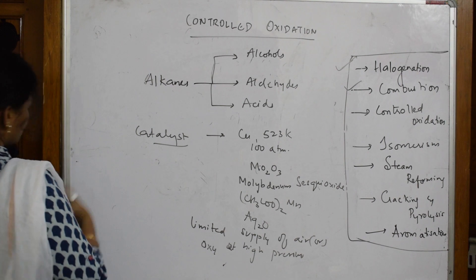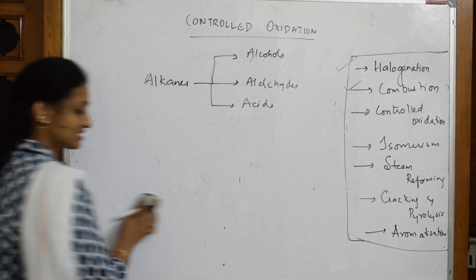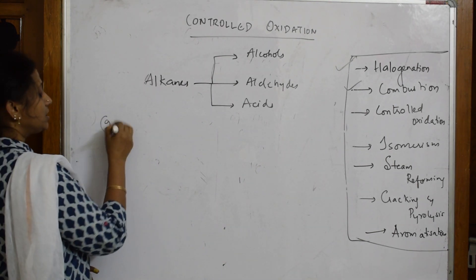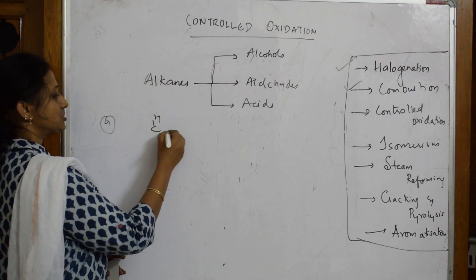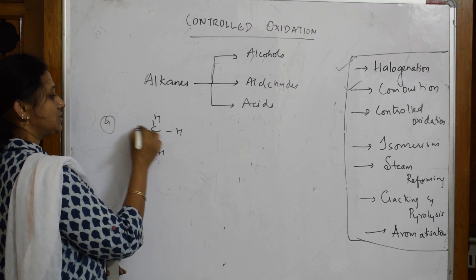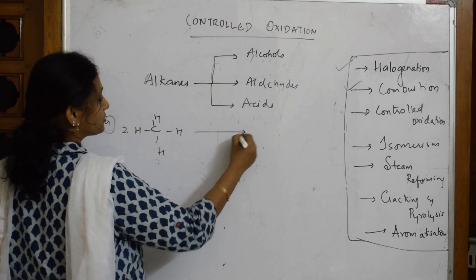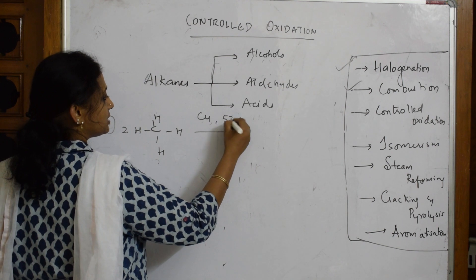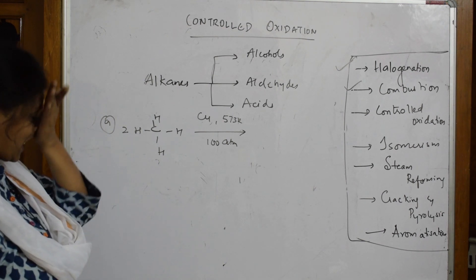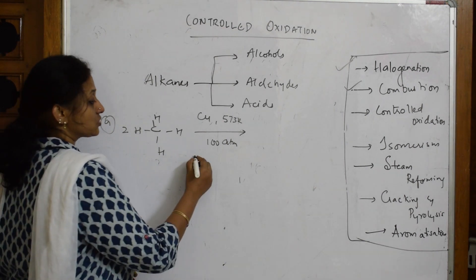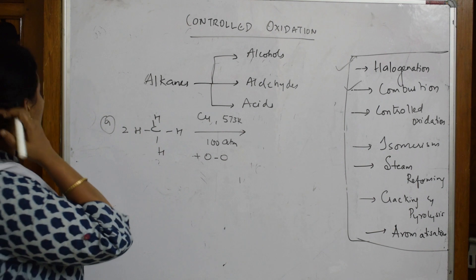Let us see the reaction. First, I am going to take the basic alkane, that is methane. I am going to take two moles CH4. I am going to use the catalyst copper at 573 Kelvin, 100 atmospheres. Limited supply of oxygen, O2. So oxidation, what happens?